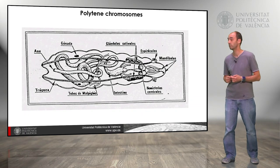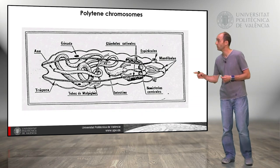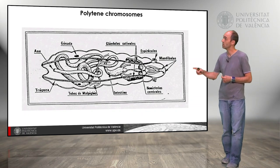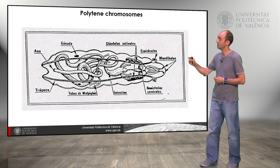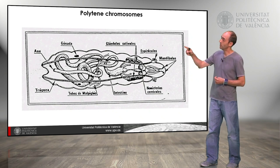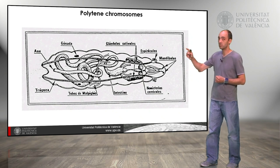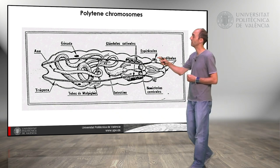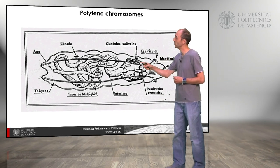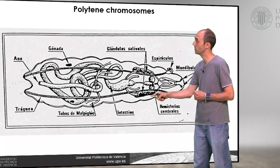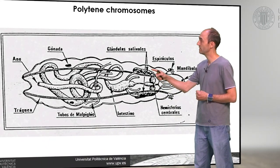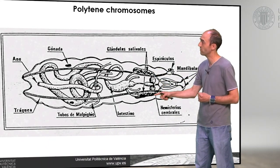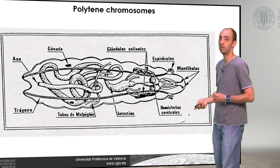Here we have a diagram of the different parts of the larva: we have the gonads, the salivary glands, and the brain. If we want to observe the salivary glands and see the polytene chromosomes, we have to pick these two glands from the larva — they are located in the first one-third of the larva.